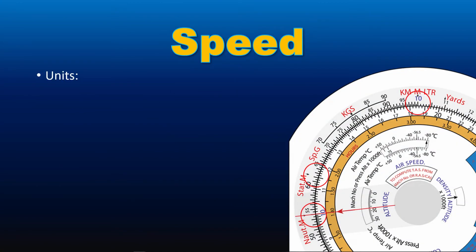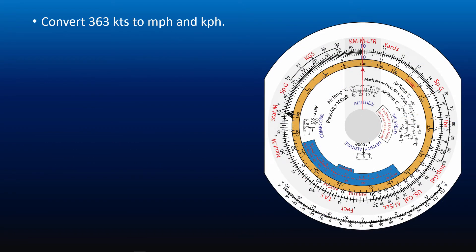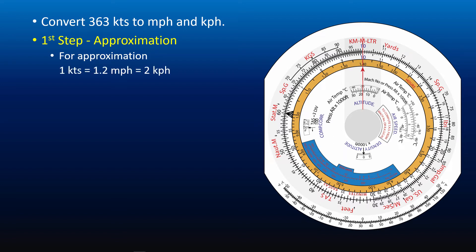Now let's take a look at speed conversion. Speed units that can be converted using CRP5 are: knots (nautical miles per hour), MPH (statute miles per hour), and KPH (kilometers per hour). The conversion factors: 1 knot equals 1.15 miles per hour and 1.852 kilometers per hour — the same as distance conversion. For the example, convert 363 knots to miles per hour and kilometers per hour. For approximation using rounded factors — 1 knot equals 1.2 MPH equals 2 KPH — we round 363 knots to 350, giving approximately 420 miles per hour and 700 kilometers per hour.